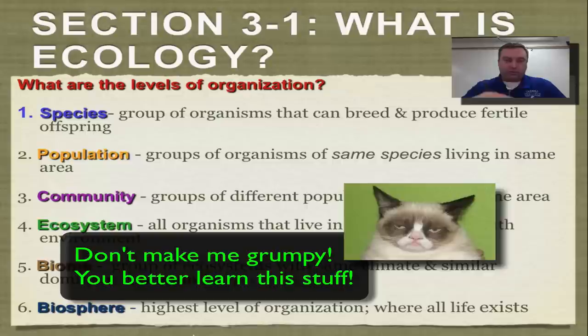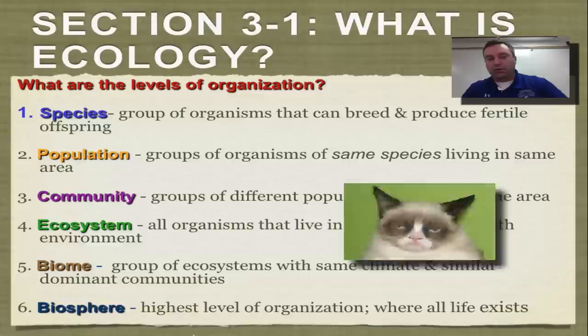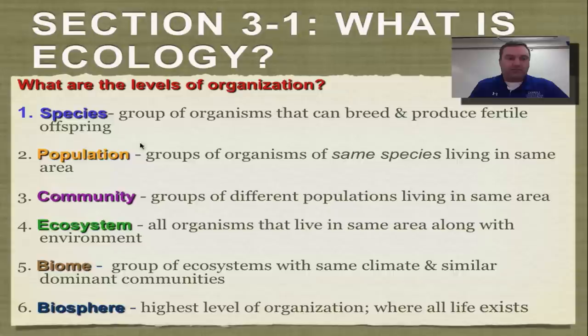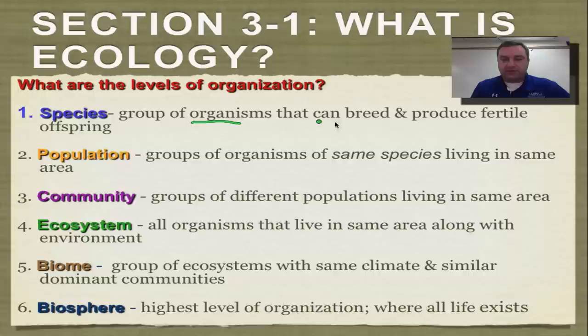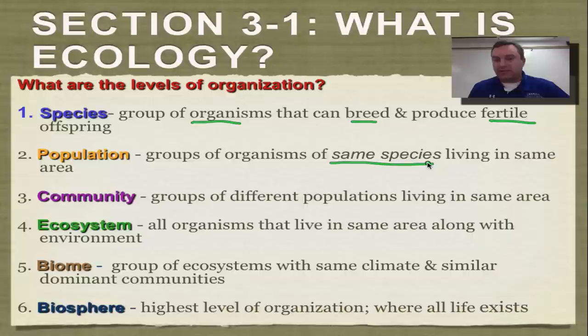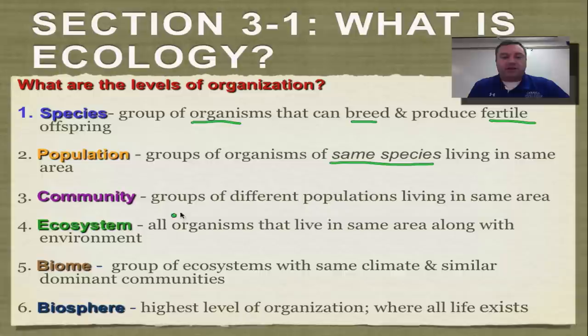Levels of organization — we went over this back in chapter one, the very basics of biology. We can start with molecules, move up to cells; cells become tissues, tissues become organs, organs become systems, systems become organisms, and then you get to the species level. A species is defined as a group of organisms that can breed and produce fertile offspring. Next up is a population: a group of organisms from the same species living in the general area. Think of a park — all the squirrels in that park is a population of squirrels.